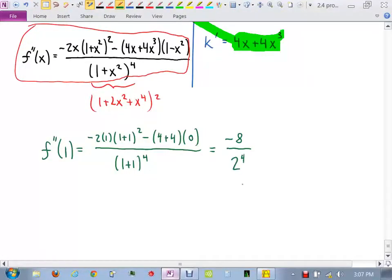2 to the 4th, it's 2 to the 4th, 16. So negative 8 over 16, negative 1 half.